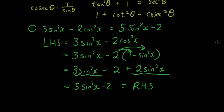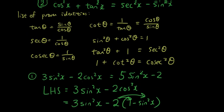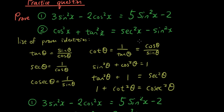Next one: 2 cos squared x plus tan squared x equals sec squared x minus sin squared x. You can see here on the left hand side I have tan squared x, but on the right hand side I don't have tan squared x.